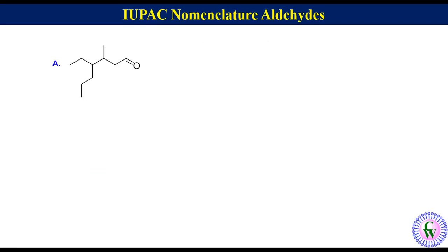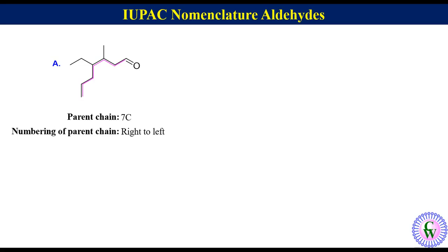Let's have examples of bigger molecules. Compound A — we will go step by step. The parent chain in this molecule is the longest chain with seven carbon atoms containing CHO. Numbering of the parent chain starts from CHO, so numbering will be from right to left: 1, 2, 3, 4, 5, 6, and 7. Since the parent carbon chain has seven carbon atoms with only C–C single bonds, it will be named as heptane.